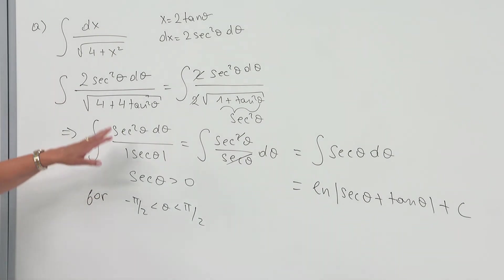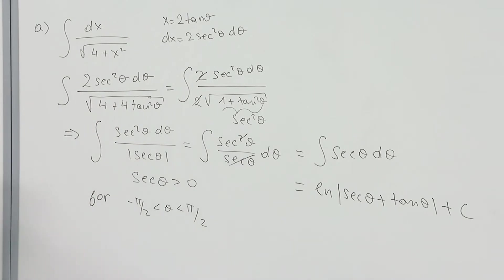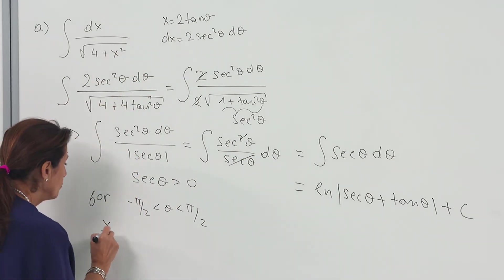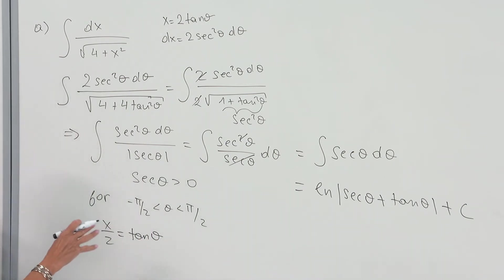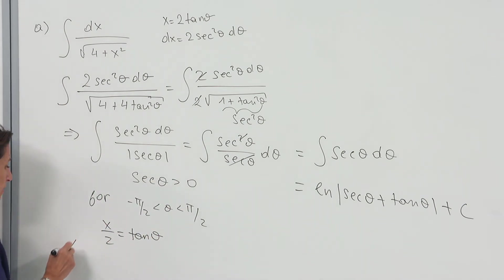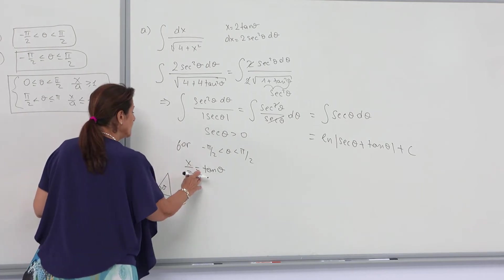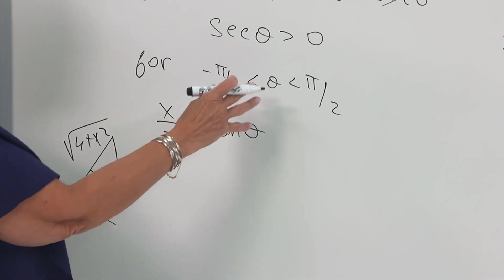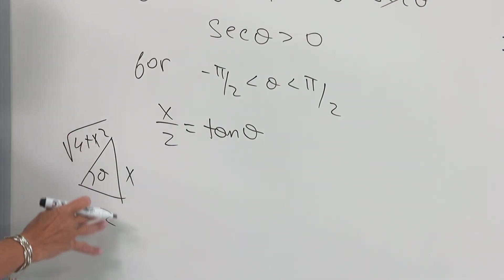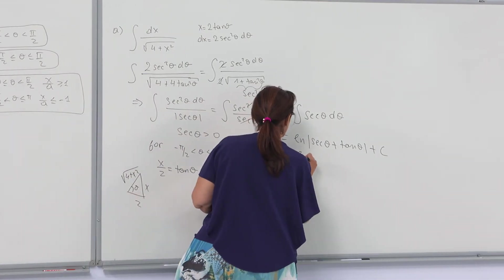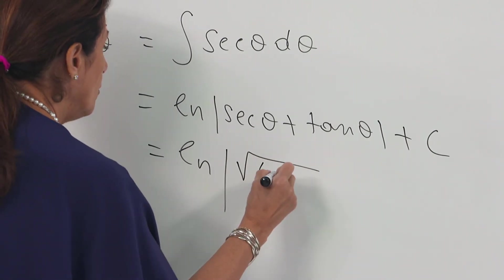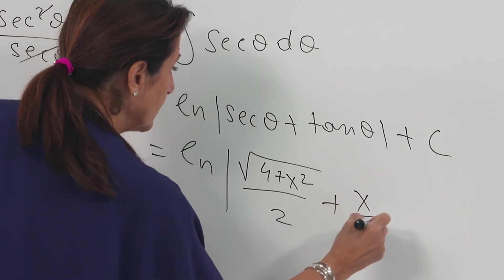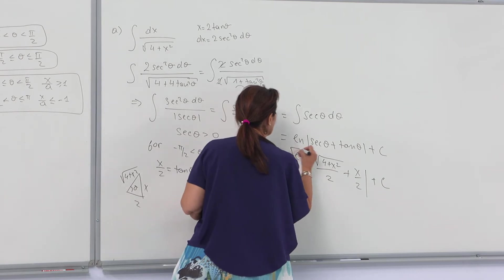Since the integral is indefinite, I need the constant C. I should replace θ by the corresponding value. From the substitution, x/2 = tanθ, so tanθ is replaced by x/2. For secθ, I sketch my triangle: tangent is opposite over adjacent, so the hypotenuse is √(4 + x²), and secant is hypotenuse over adjacent. We end up with ln(√(4 + x²)/2 + x/2) + C as the answer.